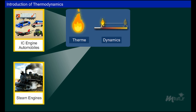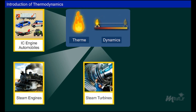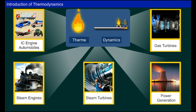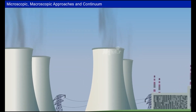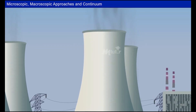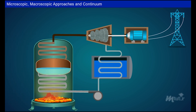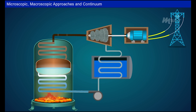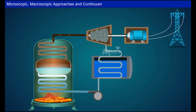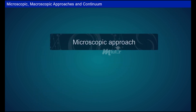Applications of thermodynamics include steam engines, steam turbines, gas turbines, and power generation. Now let us take a power plant as an example. A boiler converts water into steam, which in turn rotates the turbine blade connected to a shaft. This shaft is coupled with a generator shaft to produce electricity. When water is heated in the boiler, the temperature and pressure increase, and this can be measured by two approaches: microscopic and macroscopic.